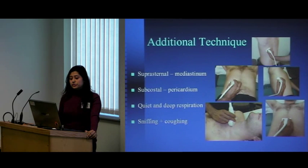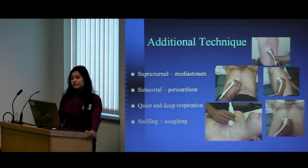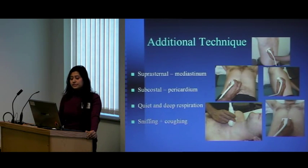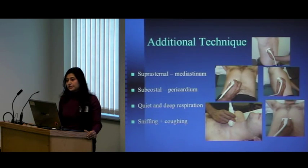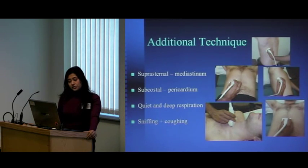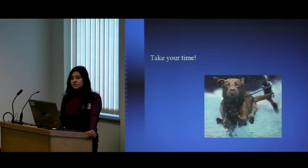We need to examine in deep and quiet respiration, and I'll go into sniffing and coughing later. Additional techniques include scanning in the suprasternal position for assessment of the mediastinum — for example to look for mediastinal masses — and adding colour to differentiate mediastinal masses from the great vessels. Scanning in the subcostal position allows you to evaluate the pericardium. Remember to take your time, especially when you're just starting out.